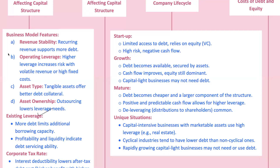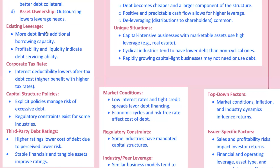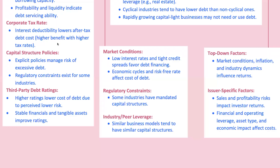Existing leverage is another factor. A company already loaded with debt might find it challenging to borrow more without increasing the risk of financial distress — it's like seeing someone maxing out their credit cards. Corporate tax rate also matters: debt is often preferred because interest payments are tax-deductible. The higher the tax rate, the cheaper debt becomes. Before the 2017 tax reforms, many U.S. firms loaded up on debt to maximize tax shields, effectively reducing their tax bills.